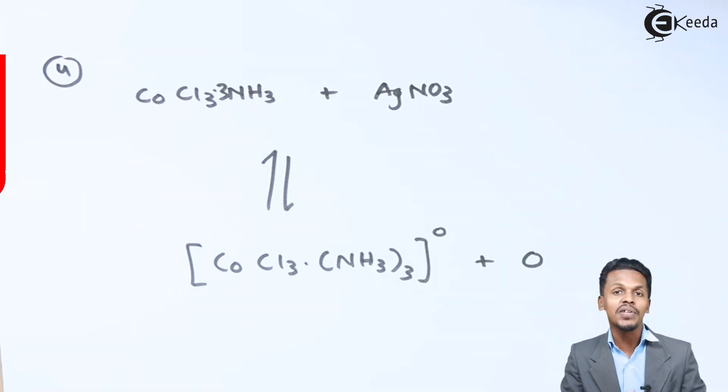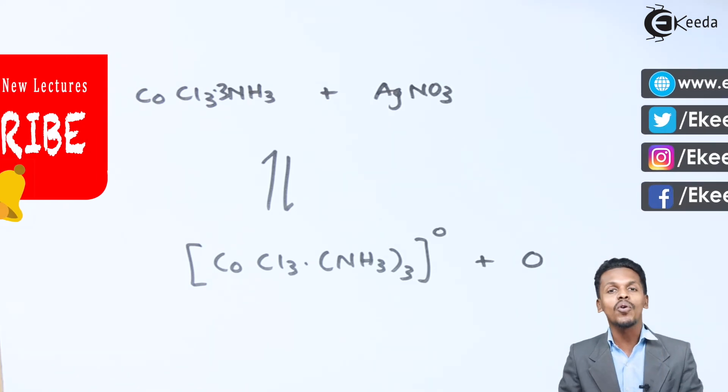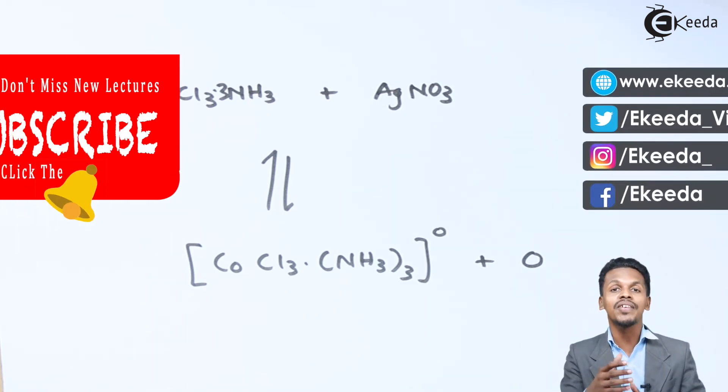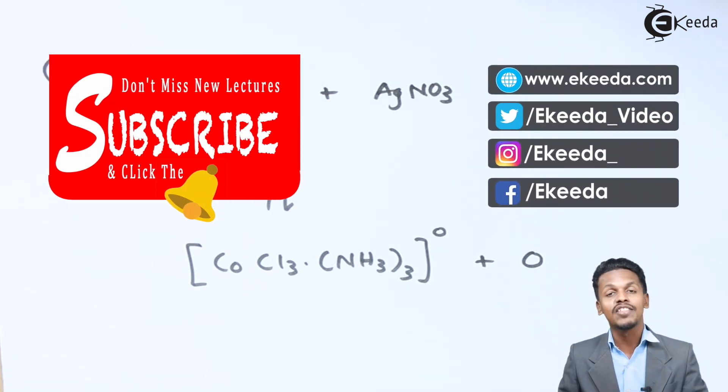This proves Werner's theory — it includes two valencies: primary and secondary. Thank you for watching this video. I hope you have understood this topic clearly. Don't forget to subscribe to the channel.